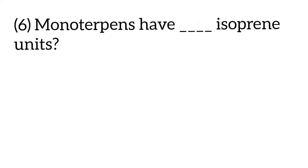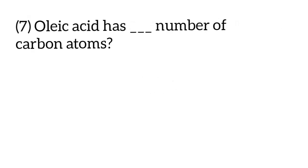The next question is: oleic acid has blank number of carbon atoms. So the answer for the question is 18. Moving on to the next question: oleic acid has a double bond between? So the answer for the question is C9 and C10.